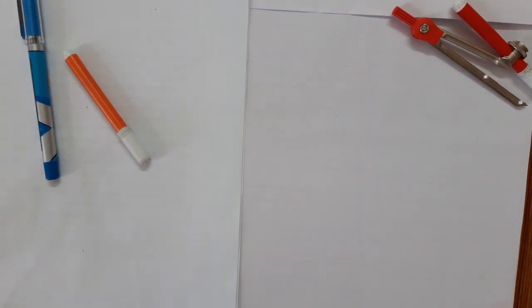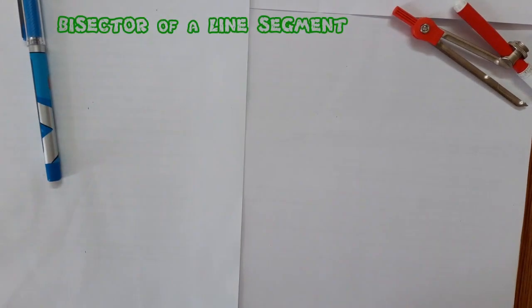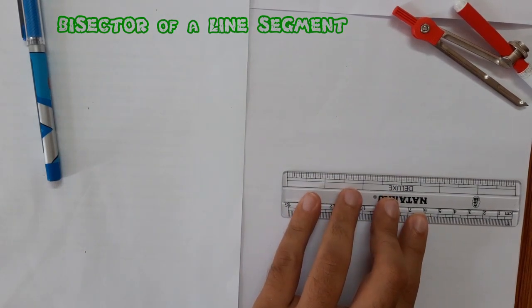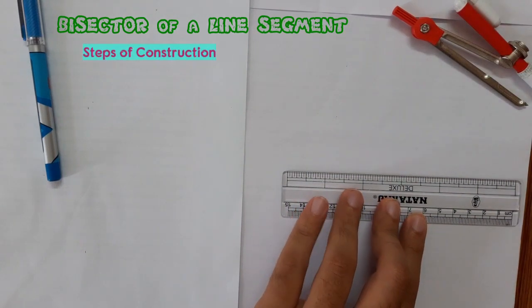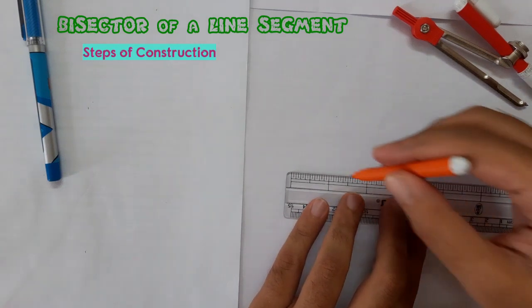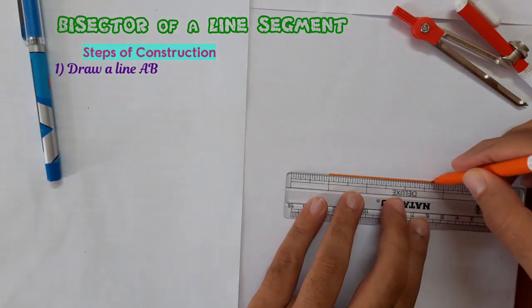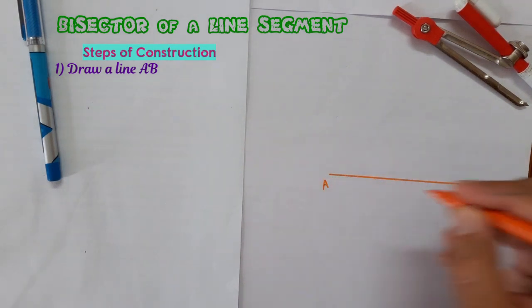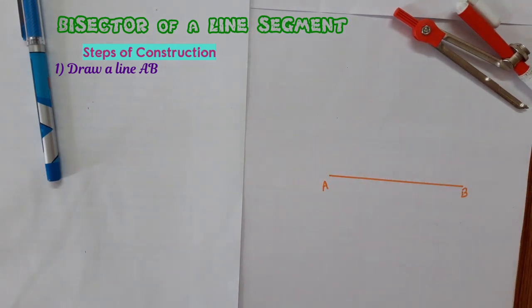In today's video we are going to see how to bisect a line. So first of all what we need is a line. So I'm going to draw a line. Let's say the line is AB.